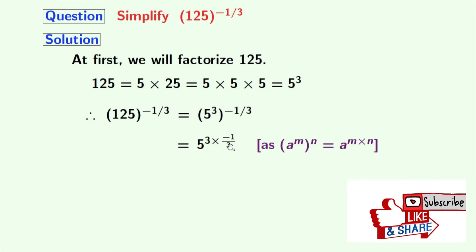Now look, in the power, 3 times minus 1 by 3, the 3s get cancelled and we have 5 to the power of minus 1.